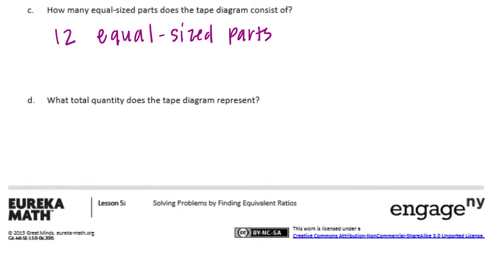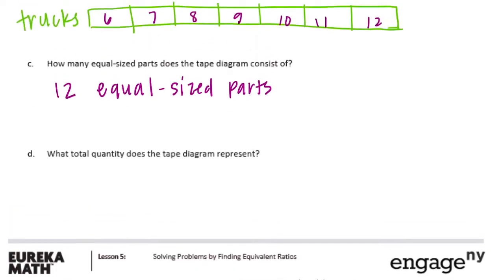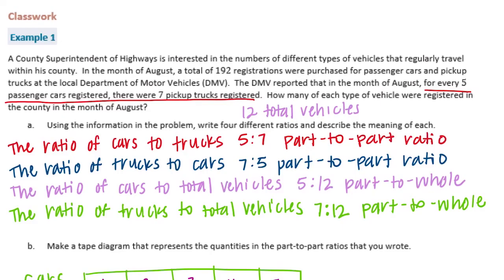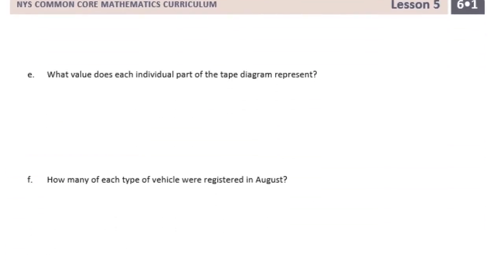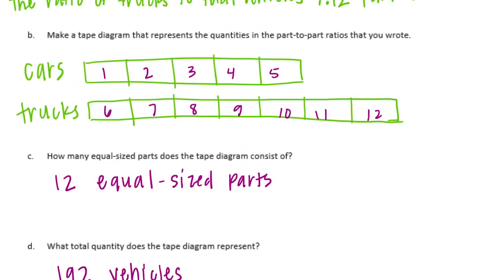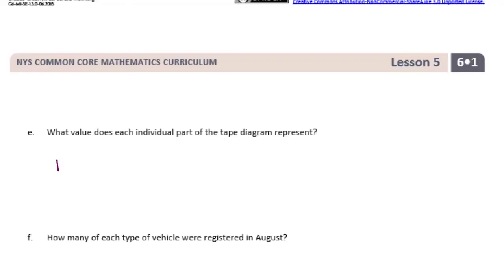Part D: what total quantity does the tape diagram represent? The five-to-seven ratio was just a ratio, but the problem is actually talking about a total of 192 registrations, so the total is 192 vehicles. In order to figure that out, we need to take our 12 equal-sized pieces and split them among the 192. So we're going to do 192 divided by 12 to see how much each piece is worth.